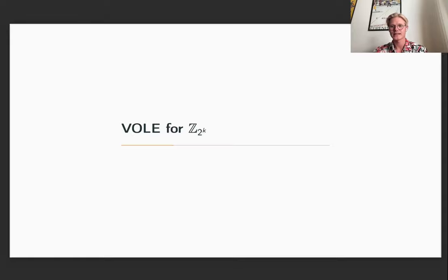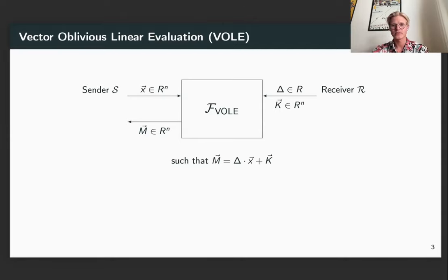The way you usually generate these linearly homomorphic commitments is through vector OLE. Vector OLE is meaning that it's a black box where the sender can input a vector X and then get out a vector M, so that this counts as a linearly homomorphic commitment to X, provided that the receiver inputs a so-called global key delta and a local key K.